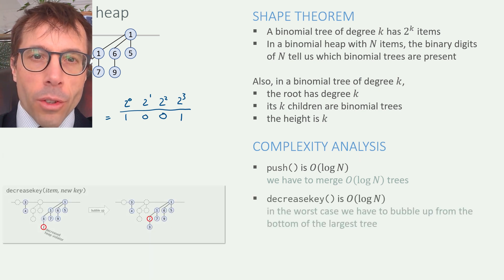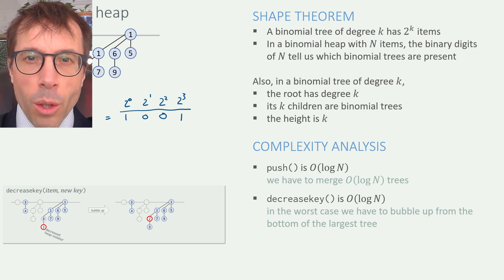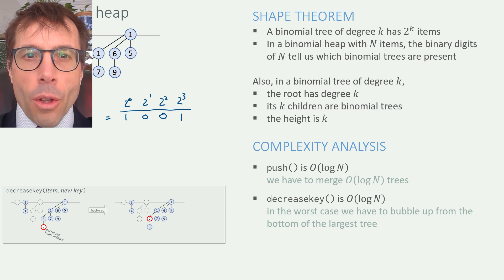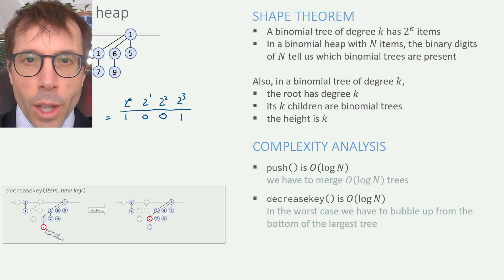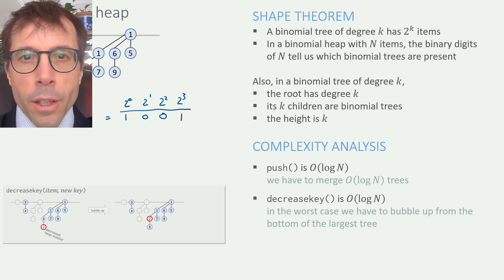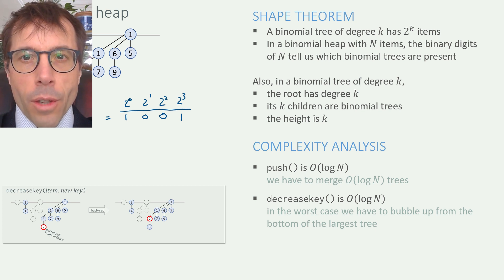Next, decrease key. This involves bubbling up the node whose key we just decreased, and we have to bubble it up far enough so that it doesn't violate the heap condition. In the worst case, it'll be the very bottom node of the largest tree. The largest tree has size log n, as we said, since that's how many digits there are in the binary expansion of n. And it's pretty easy to check that a binomial tree of degree log n has height log n, so that's the complexity.